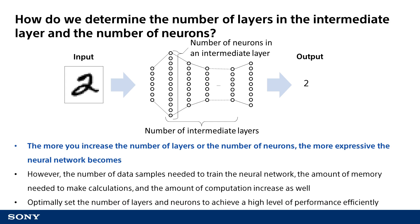On the other hand, when the number of neurons or the number of layers increases, the number of data samples needed to train the neural network, the amount of memory needed to make calculations, and the amount of computation increase as well. In some cases, insufficient memory may prevent training on the computer, or an excessive increase of computation may cause the execution of training or the execution of a trained neural network to be extremely slow.